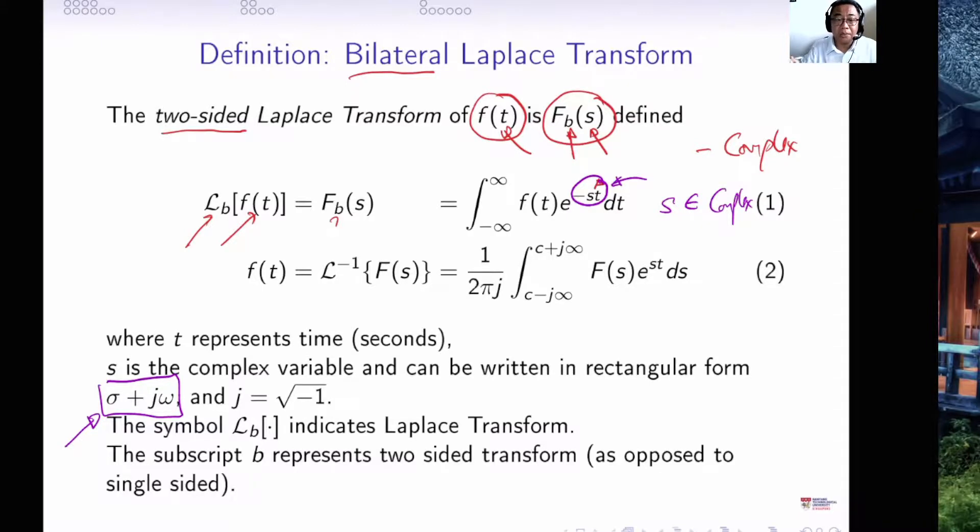Where σ is the entire real number, and ω is the entire real number, multiplied by j, so it is the entire complex line.